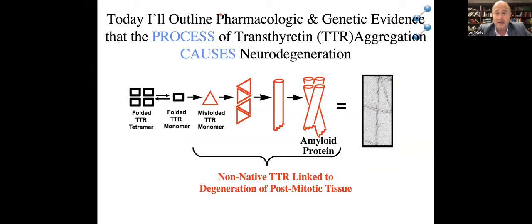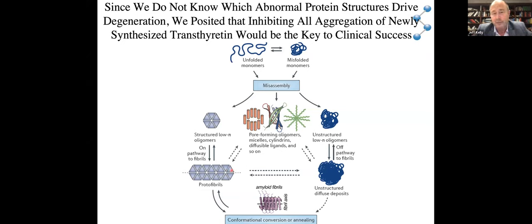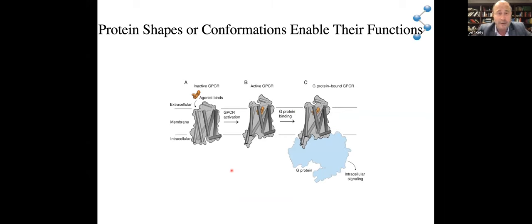Today I'm going to outline the pharmacologic and genetic evidence that it's actually the process of aggregation that causes these degenerative phenotypes. Given that many different aggregate structures are formed at steady state, including amyloid fibrils, we set out to block the entire process of aggregation. That was in stark contrast to what most people were doing — billions of dollars have been spent on antibodies targeting just the amyloid structure or misfolded protofilaments. We thought it was important to block the entire process of aggregation to achieve clinical success.